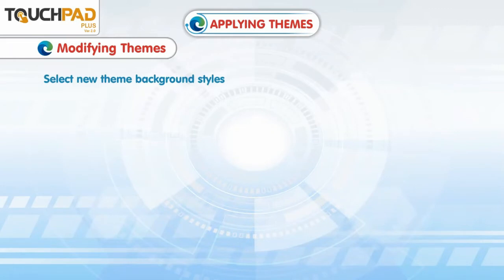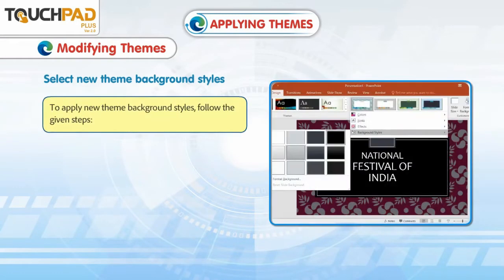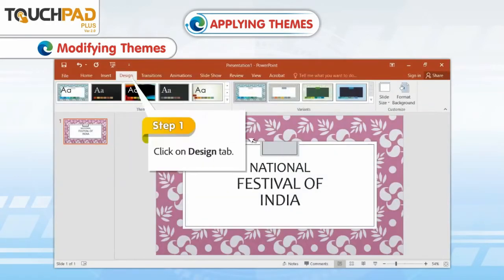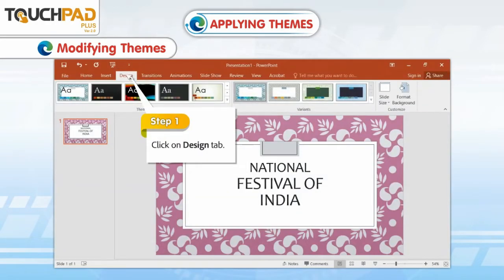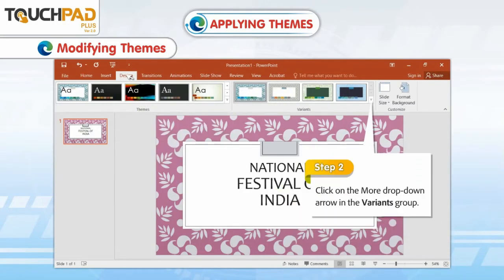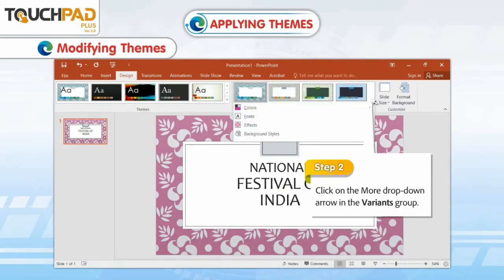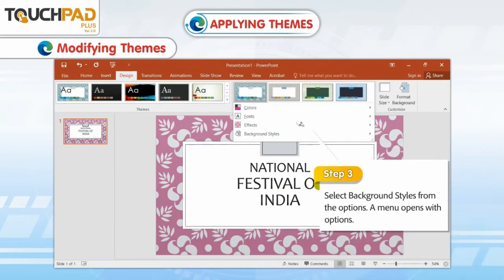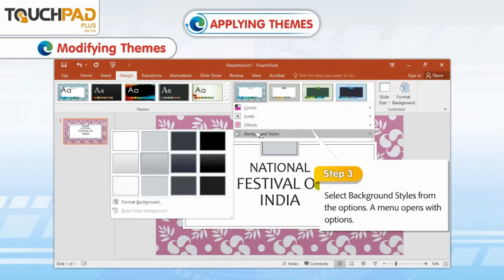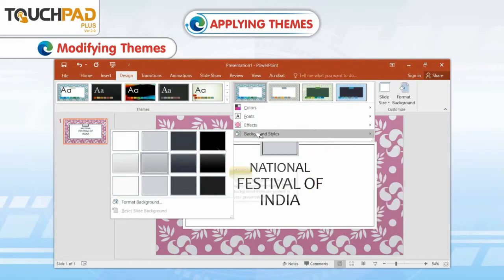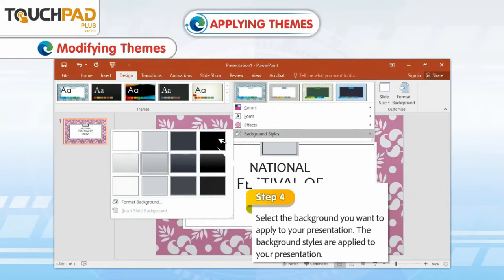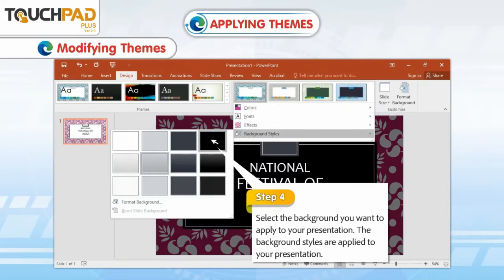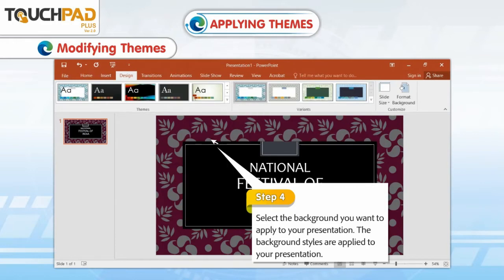Select New Theme Background Styles. To apply New Theme Background Styles, follow the given steps. Step 1: Click on the Design tab. Step 2: Click on the More drop-down arrow in the Variants group. Step 3: Select Background Styles from the options. A menu opens with options. Step 4: Select the background you want to apply to your presentation. The background styles are applied to your presentation.